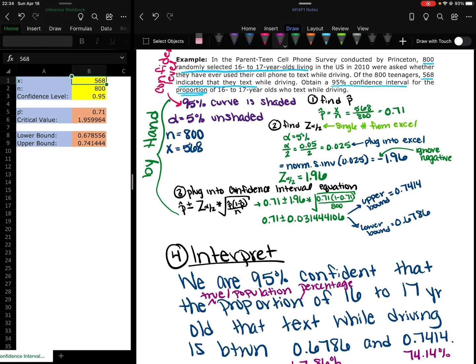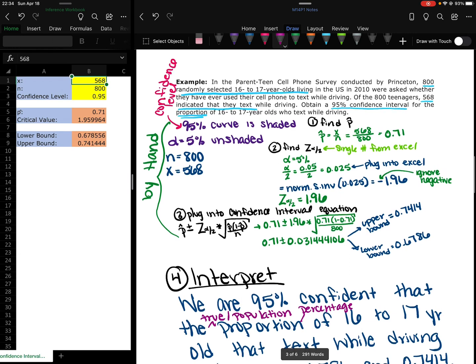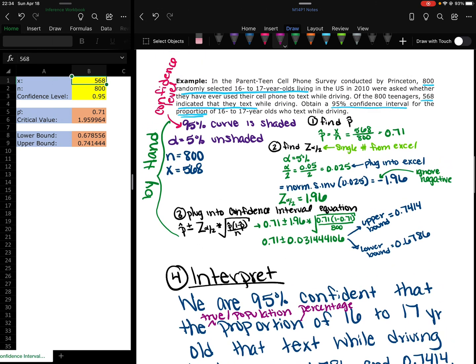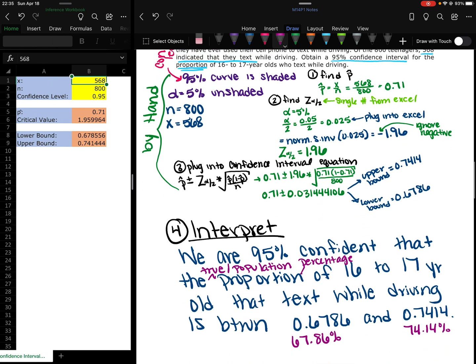That's the first example. And then I have another example but I'm going to go ahead and do a separate video for that one. There you go. First example on how to do a confidence interval.